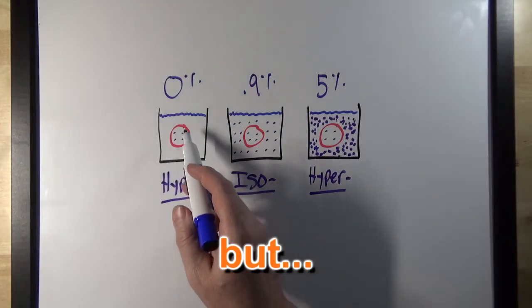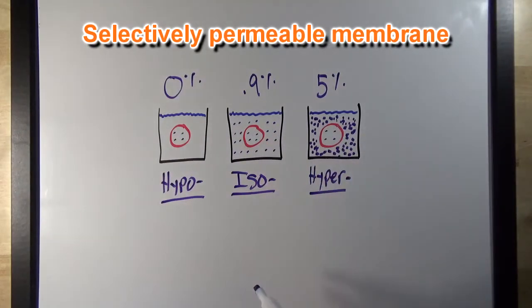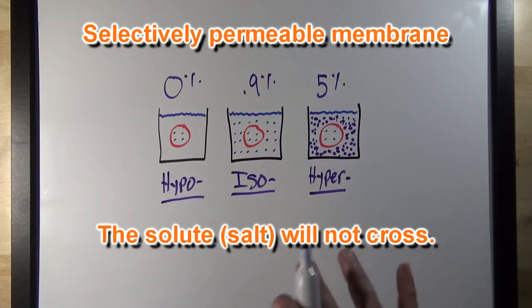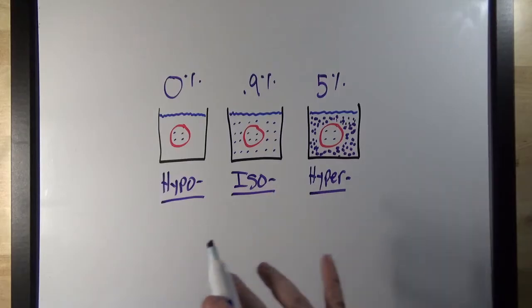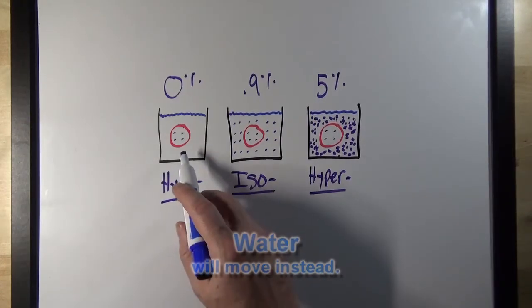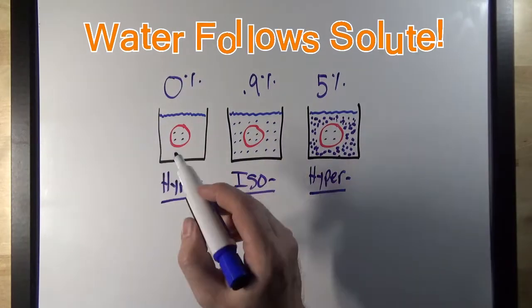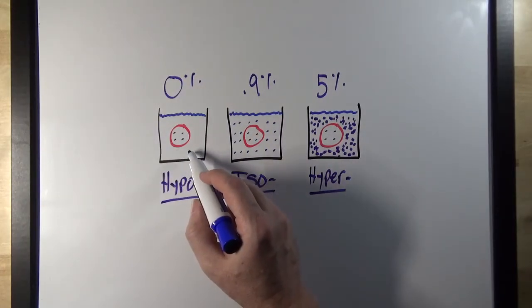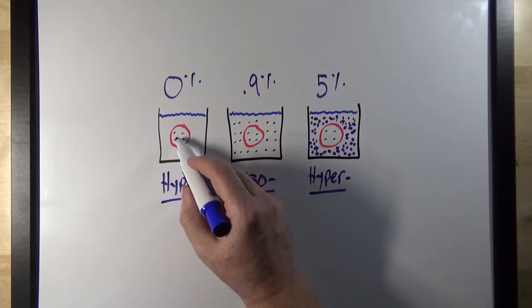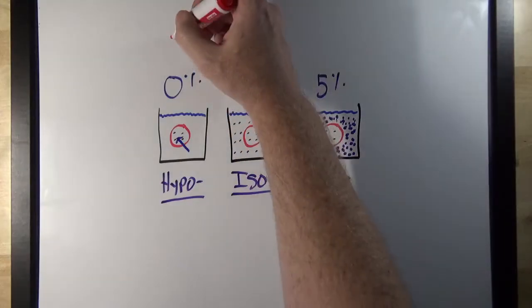Remember, we're dealing with a red blood cell that has a selectively permeable membrane, so those solute particles are not going to be able to cross the membrane. In order to balance the concentration of the solution, something else has to move — and that something else is water. Water follows solute, so water is going to move toward the higher solute concentration. In the hypotonic case, that means water is going to move into the cell, causing the cell to swell up and burst.